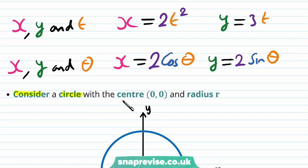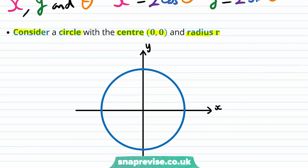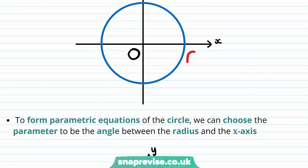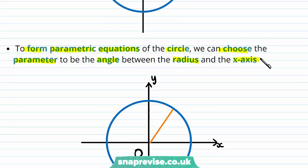Consider a circle with centre (0, 0) — the origin — and radius r. To form parametric equations of the circle we can choose the parameter to be the angle between the radius and the x-axis. Consider the radius and the angle between it and the x-axis — this angle is theta, which we'll use as our parameter.